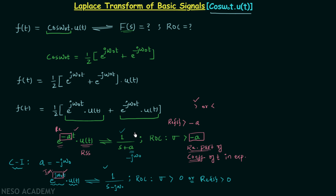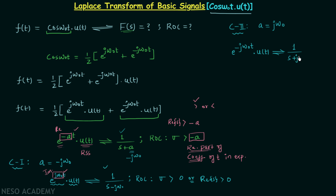Case 2: We calculate the Laplace transform of e^(-jω₀t)·u(t). For this we replace a by jω₀, giving the Laplace transform as 1/(s + jω₀). Following the same process for the ROC — the real part of the coefficient of t is again 0, and we have u(t) — so the ROC is again σ > 0.